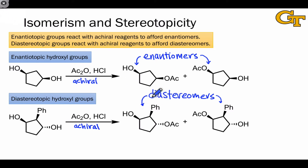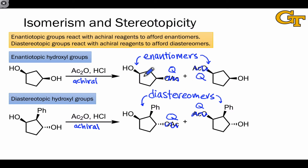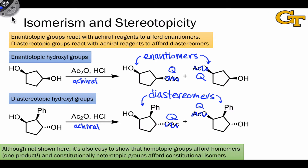If all we're interested in is the spatial difference between the groups, then we can replace this acetoxy group with pretty much anything. We could name it X or we could name it Q, as is done in the substitution test. And regardless of what we call that test group, we're going to get the same result — these are still enantiomers, and these are still diastereomers. Homotopic groups always afford homomers, and reaction of constitutionally heterotopic groups always affords constitutional isomers.